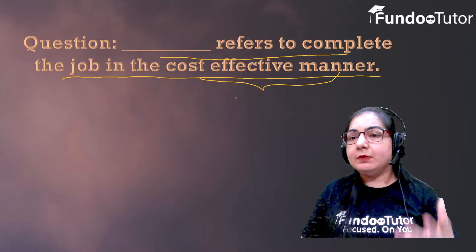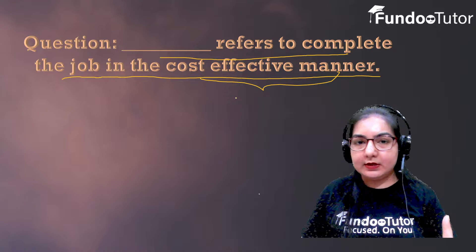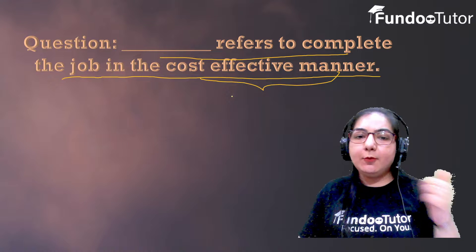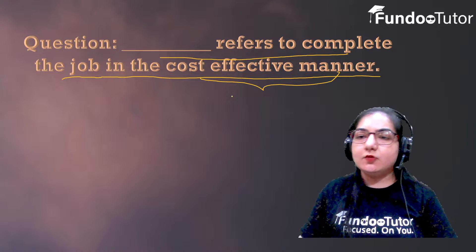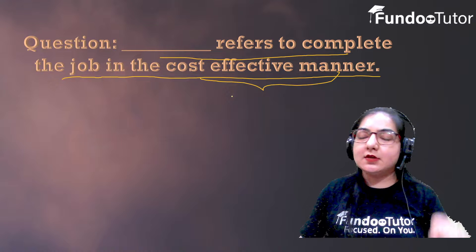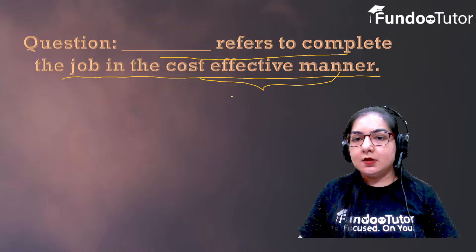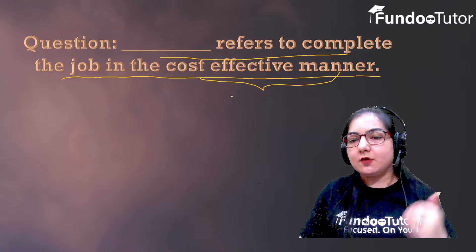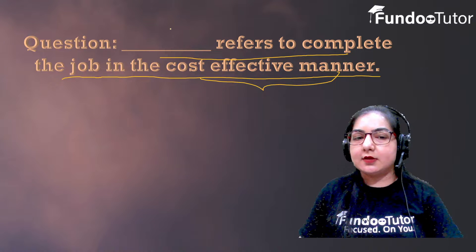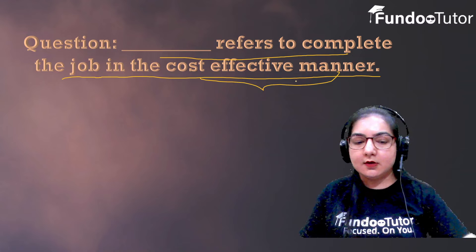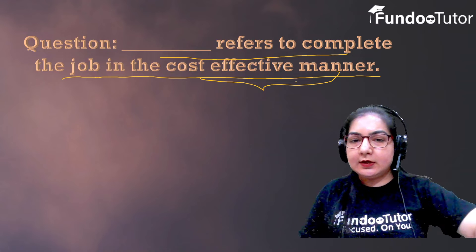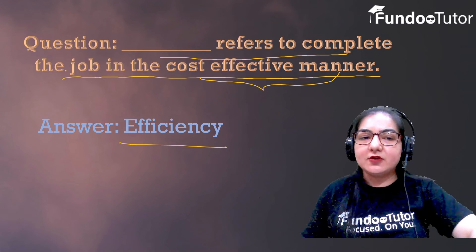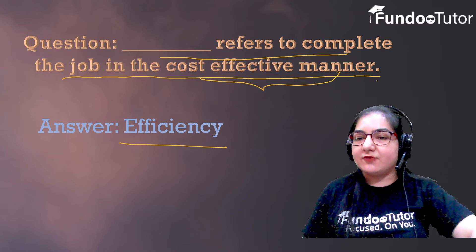We require resources to complete the job. The resources we use — the cost is less. So that means you use resources properly, which is what determines the cost, and that is called the cost-effective manner. So the entire process is called efficiency. Efficiency refers to completing the job in a cost-effective manner.